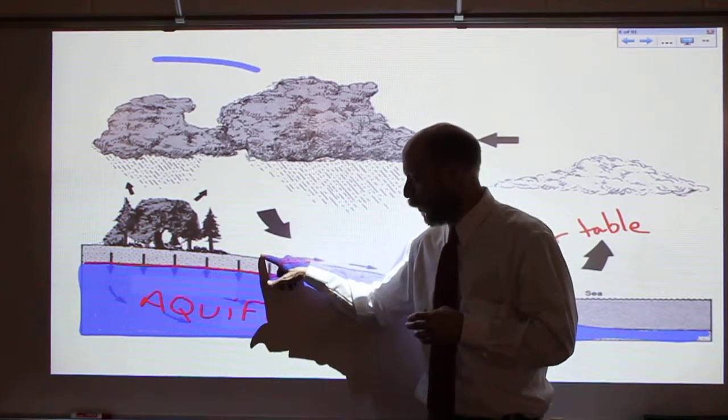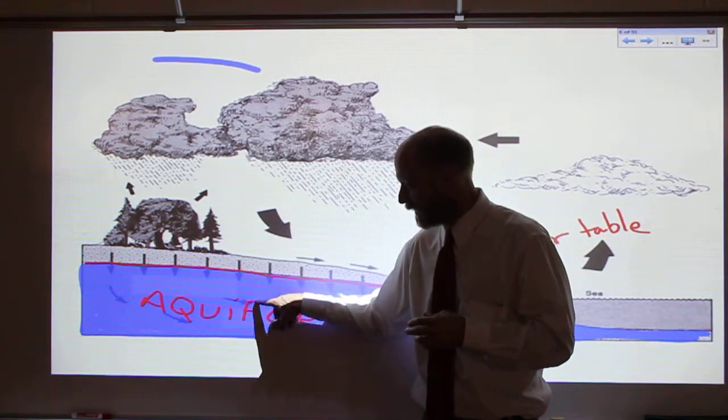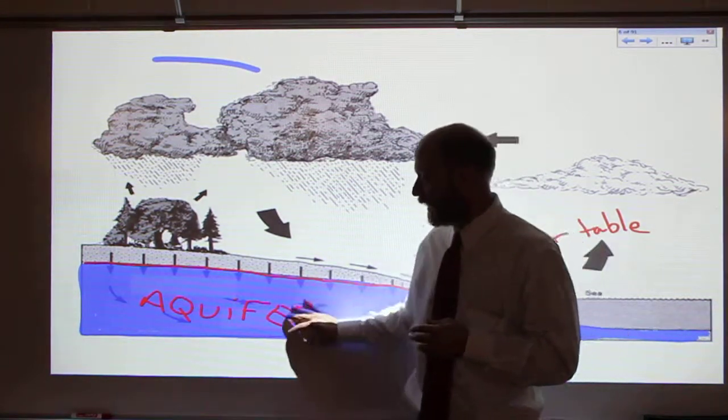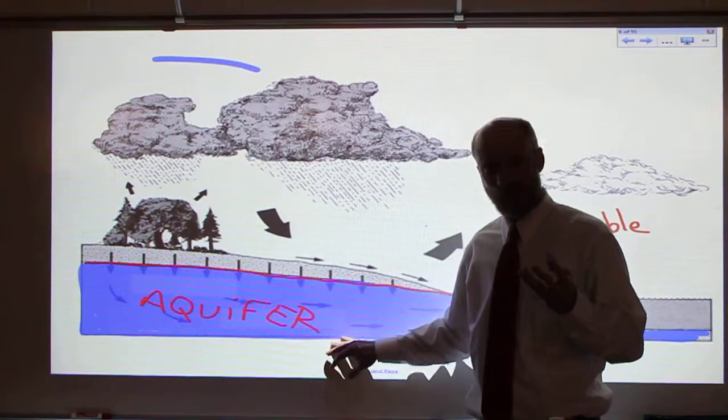And if you have a well, you make sure you drill the well into this. It's called the zone of saturation. The ground is saturated. That area is called an aquifer where there's water down there.